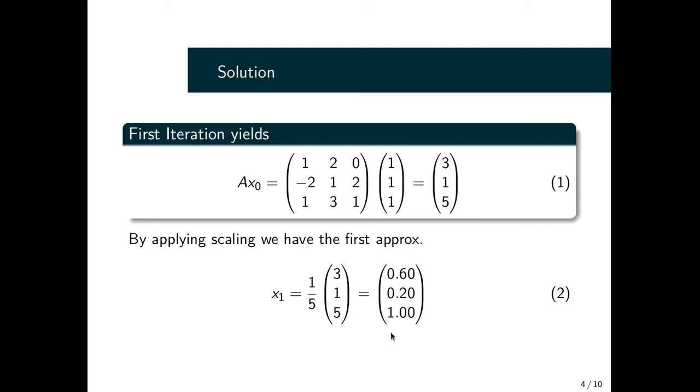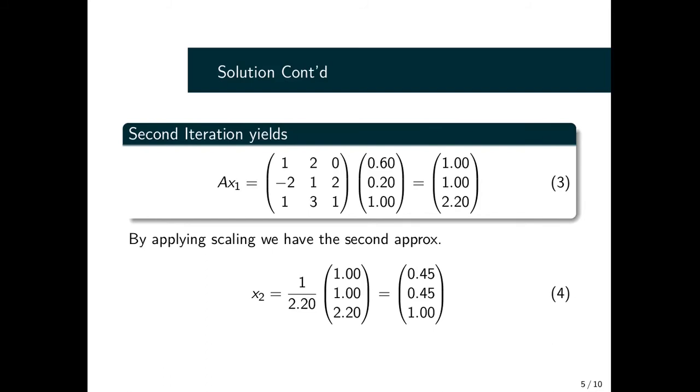Having obtained our x₁, we go a step further to find x₂. We have our matrix A and our x₁ that we already obtained. We multiply to get this column vector, pick the maximum value, and use it to normalize. This maximum value is the approximate eigenvalue. After performing the scaling, this is our approximate eigenvector for the given approximate eigenvalue.